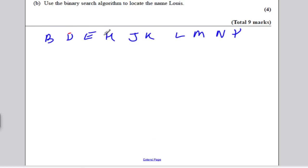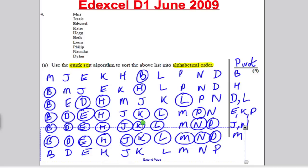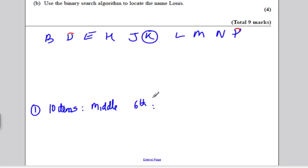So the first thing to do is to count up how many we've got. Now we've got, I'll write my working down here, one, two, three, four, five, six, seven, eight, nine, ten, ten items. So the middle is the six, which is one, two, three, four, five, six, which turns out to be Katie.